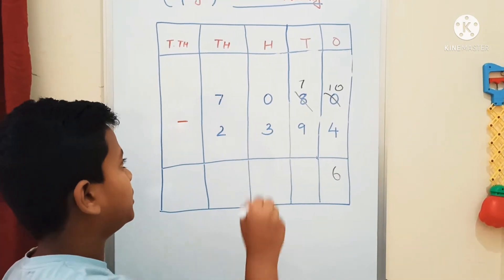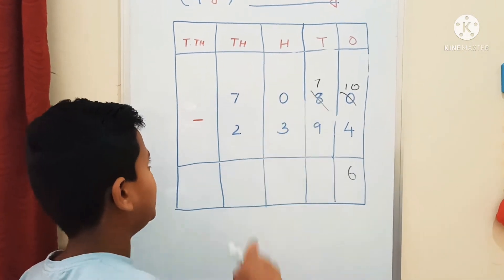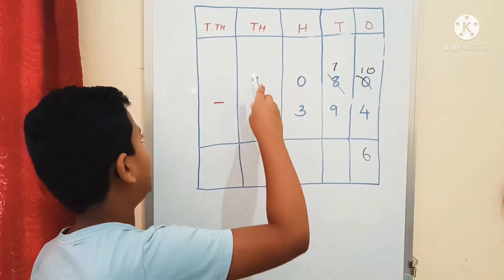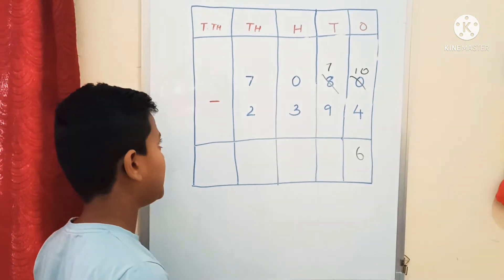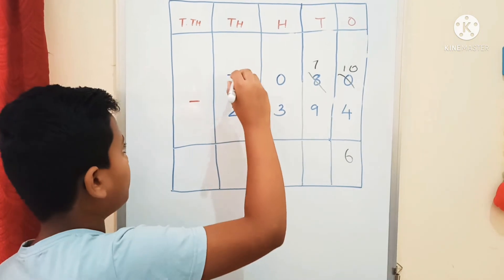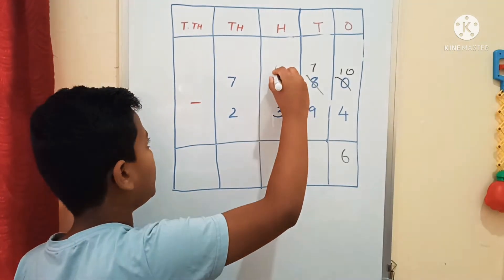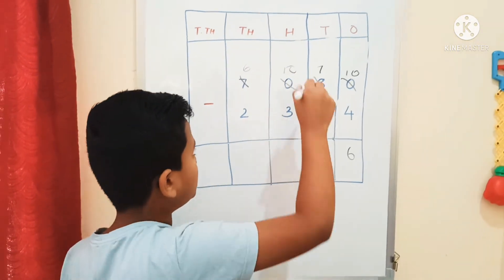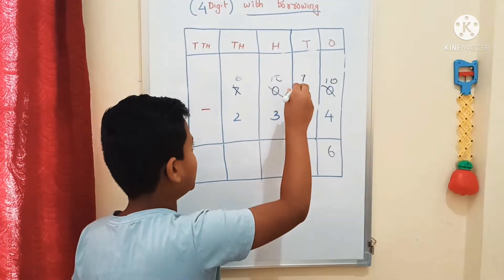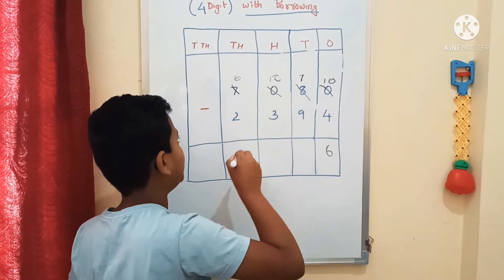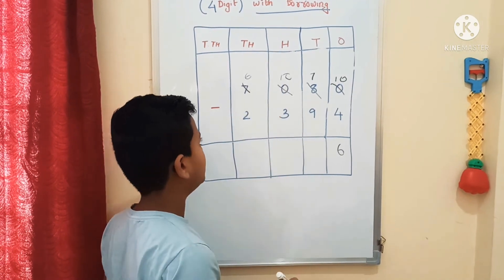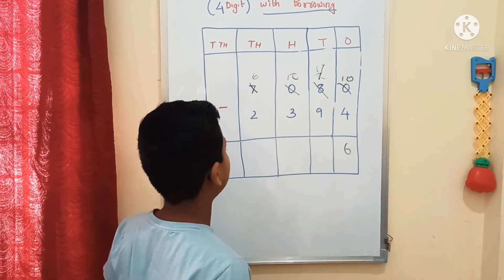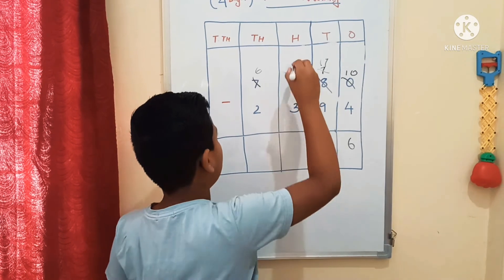We go to the 10th place. We cannot subtract 9 from 7. We go to the 100th place, but here we have 0, so we can't borrow. We go to the 1000th place. In the 1000th place, we have 7. We will borrow 10 hundredths. Now this 0 is 10, and after borrowing, this 7 is 6. Again, starting from the 10th place: we cannot subtract 9 from 7. In the 100th place, we have 10. After borrowing, this 7 is 17, and this 10 is now 9.